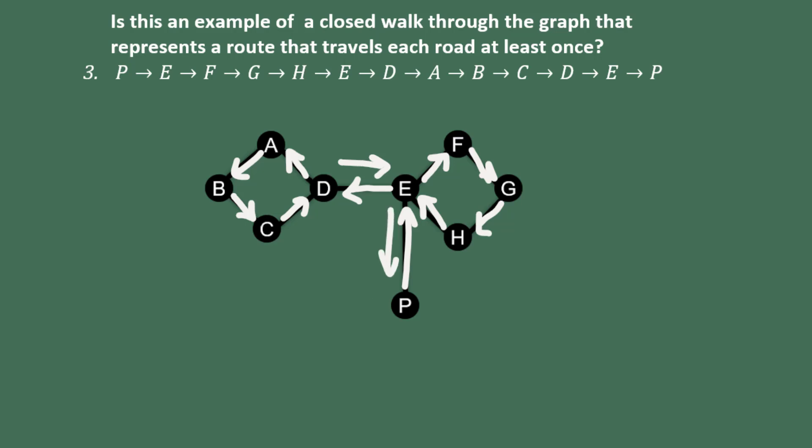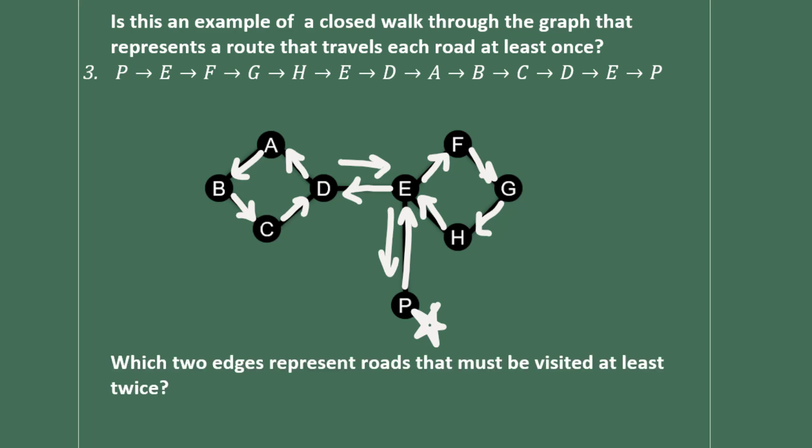So this is closed because it begins and ends at P. And it's a walk because it's a sequence of adjacent vertices. We didn't go off the graph. It visits each edge at least once so each road is visited at least once.